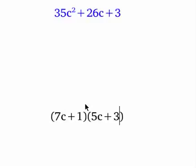So 7 times 5 is 35, 1 times 3 is 3, of course, and then to get the middle terms we have to do the two outers and the two inners. The outers give us 21c, the inners give us 5c, 21 plus 5 is 26, so that works.